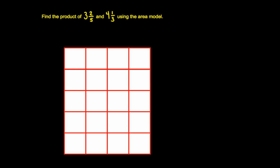So let's think about what we're being asked to do. We're being asked to find the product of 3 and 2 fifths and 4 and 1 third using the area model. The area model is a very visual method for representing a problem so that we can actually see how many square units there are. To find the area of something is simply to find the number of square units, so there's going to be some multiplication involved here.